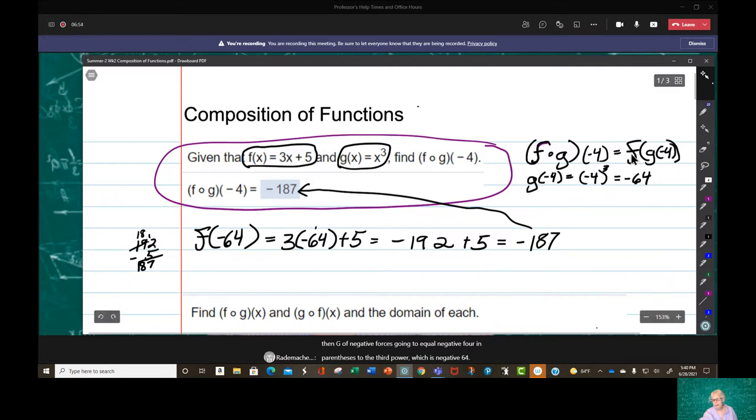Now, f of g of negative 4 is going to be f of negative 64 and nothing other than that. If f of x equals 3x plus 5, all we have to do is take negative 64 and put it into the x. So that we have 3 times negative 64 plus 5, which is negative 192 plus 5, which is negative 187. So f circle g of negative 4 is negative 187.